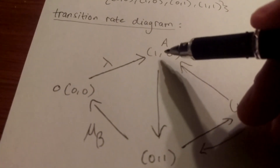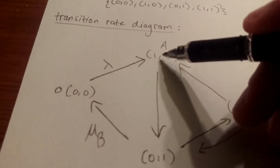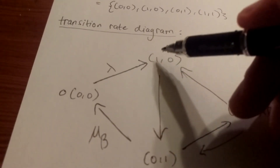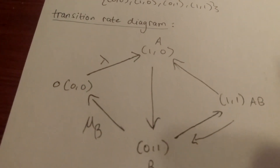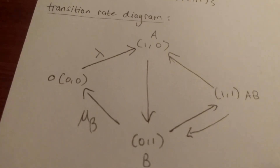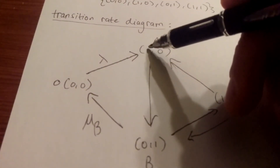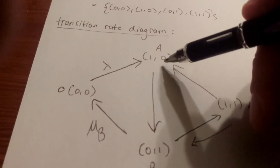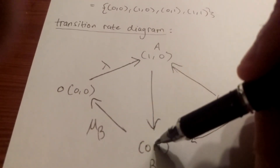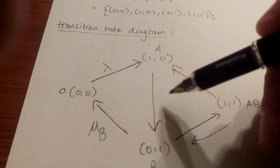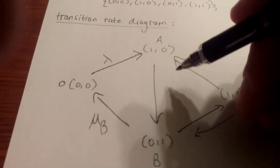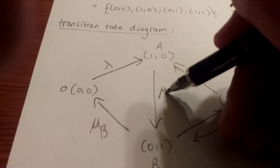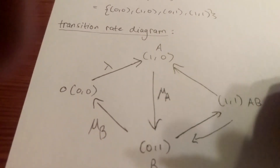When someone is being served by A and B is free, the customer moves from A to B sequentially. So the transition from state (1,0) to (0,1) occurs at the service rate of server A, which is μ_a.